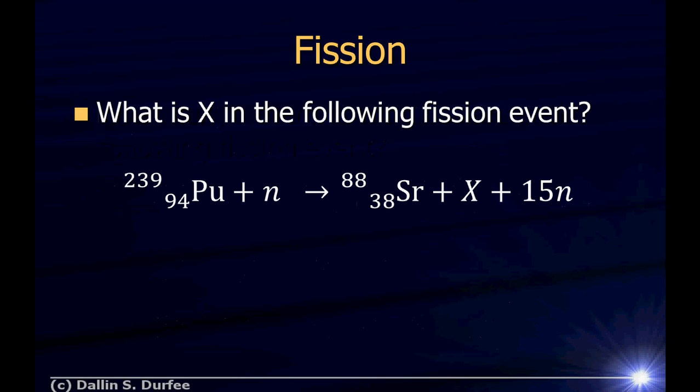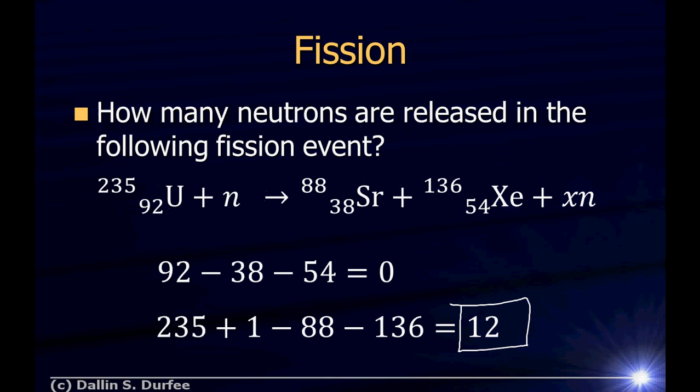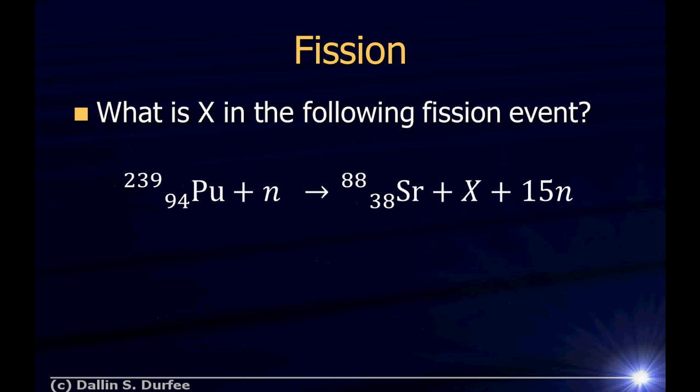What is X in the following fission event? So we look at this and say, how many protons did I start out with? I started out with 94. 38 of them are accounted for. How many are left? 94 minus 38 is 56, so this must be element number 56.